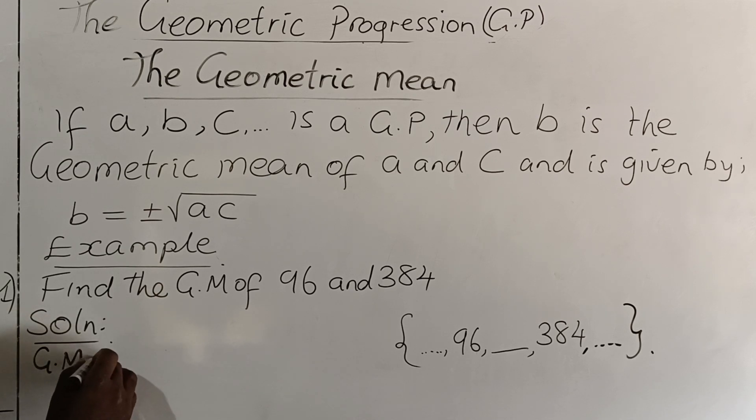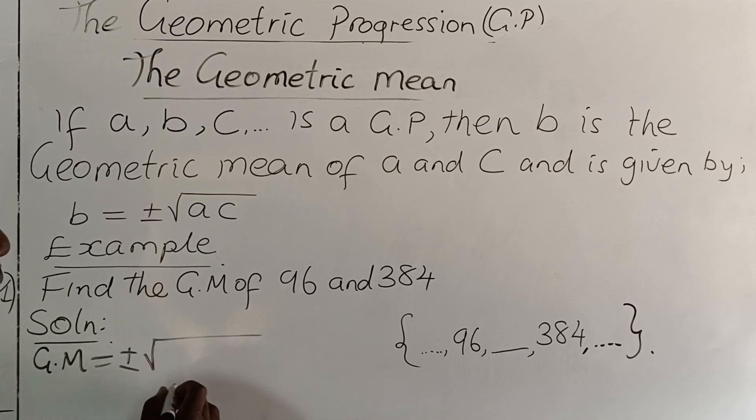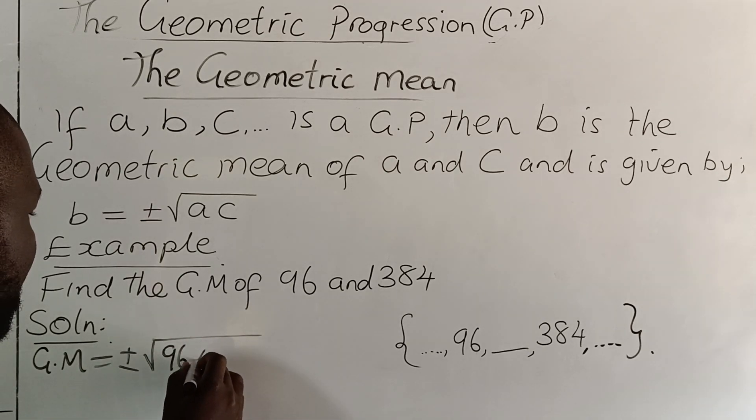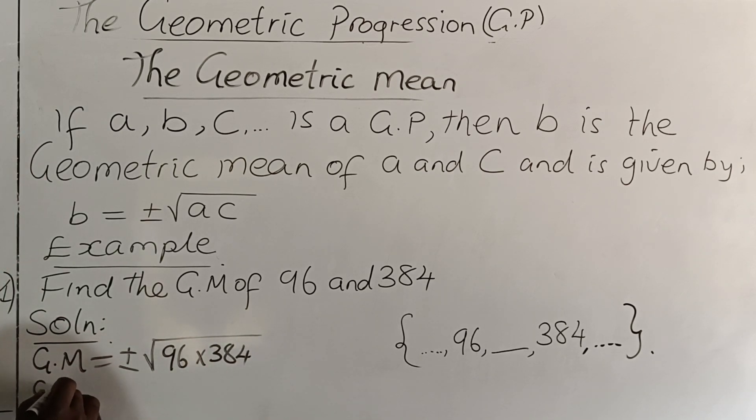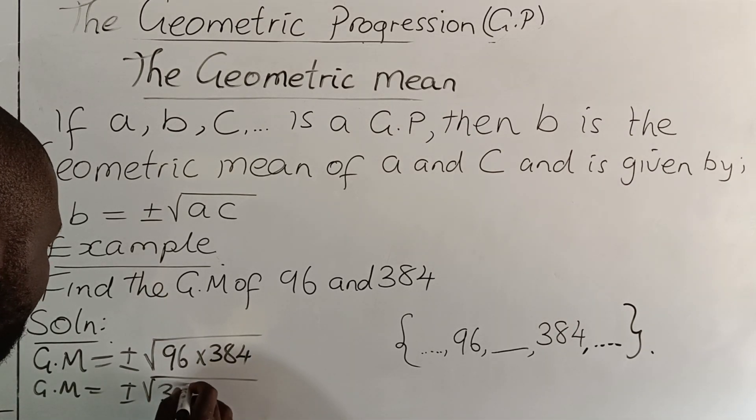The way we do it, we say the geometric mean is equal to ±√(96 × 384). Now when we consult our multiplication, we are going to see that when we multiply 96 and 384 we are getting 36...